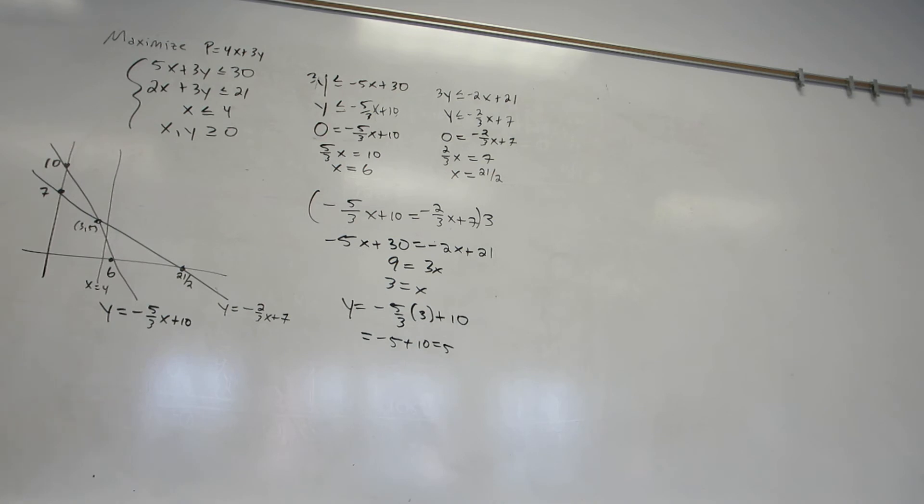Now, I want to know the region, so I'm going to go back to each line and place arrows. For my first one, y is less than minus 5 thirds x plus 10. y is less than minus 2 thirds x plus 7. x is less than 4. And I have to stay inside the first quadrant. The overlap is this little region right there.